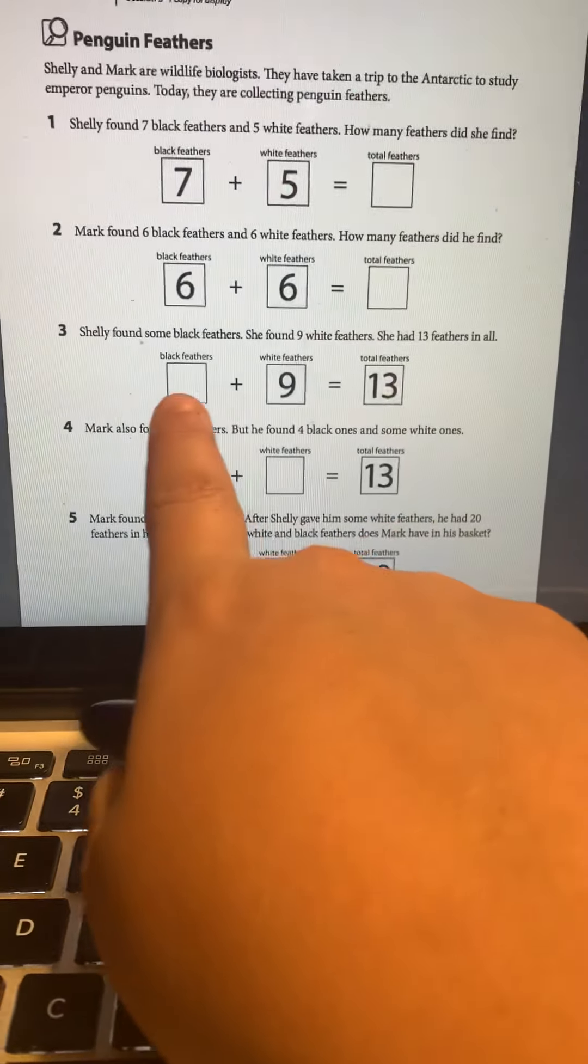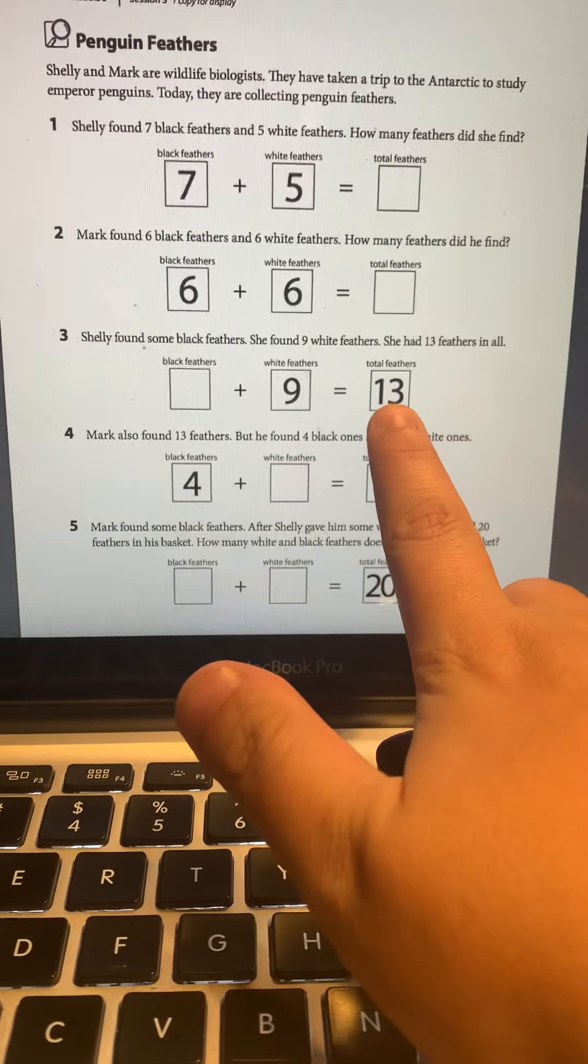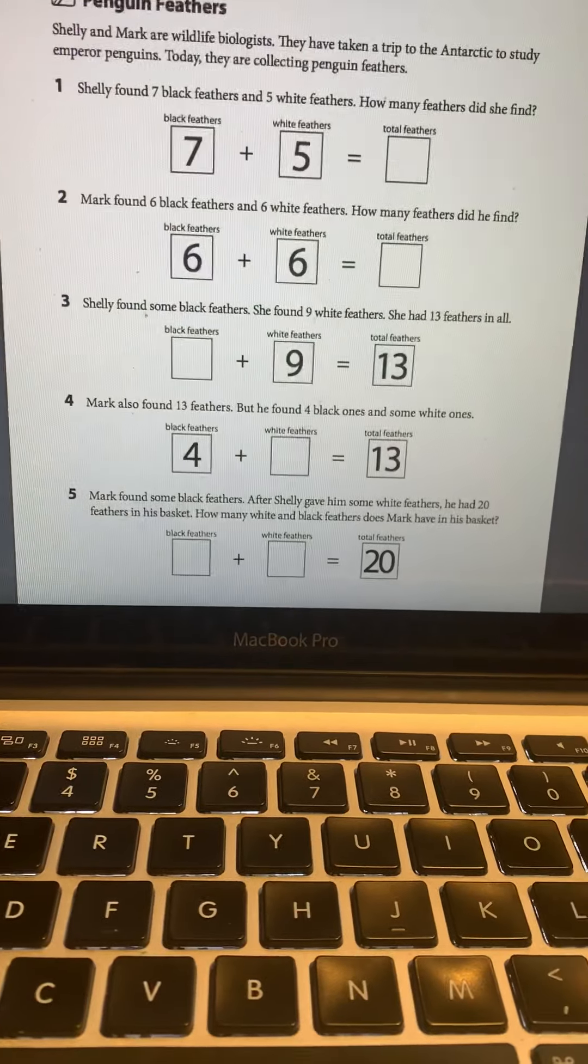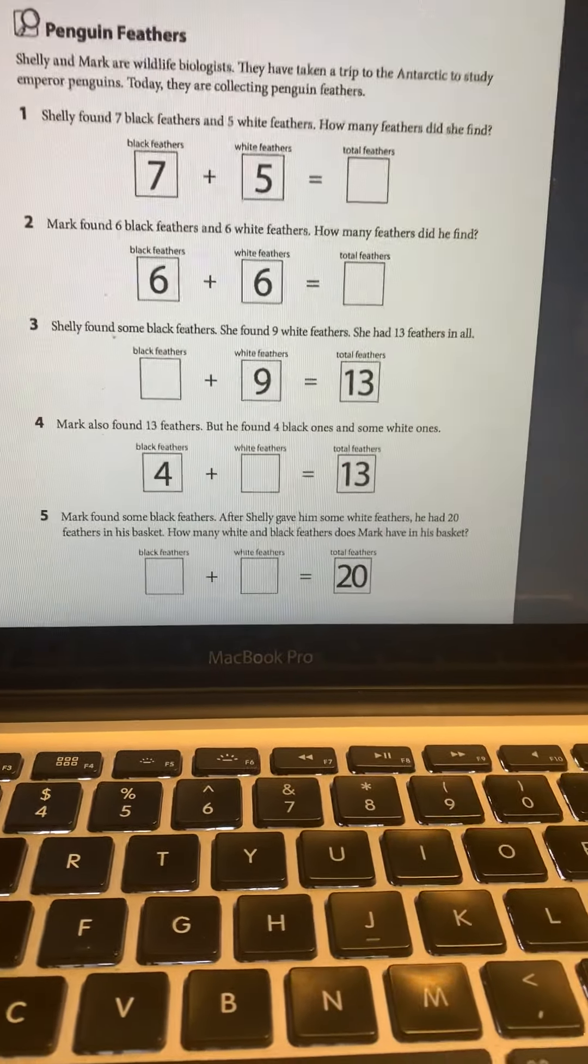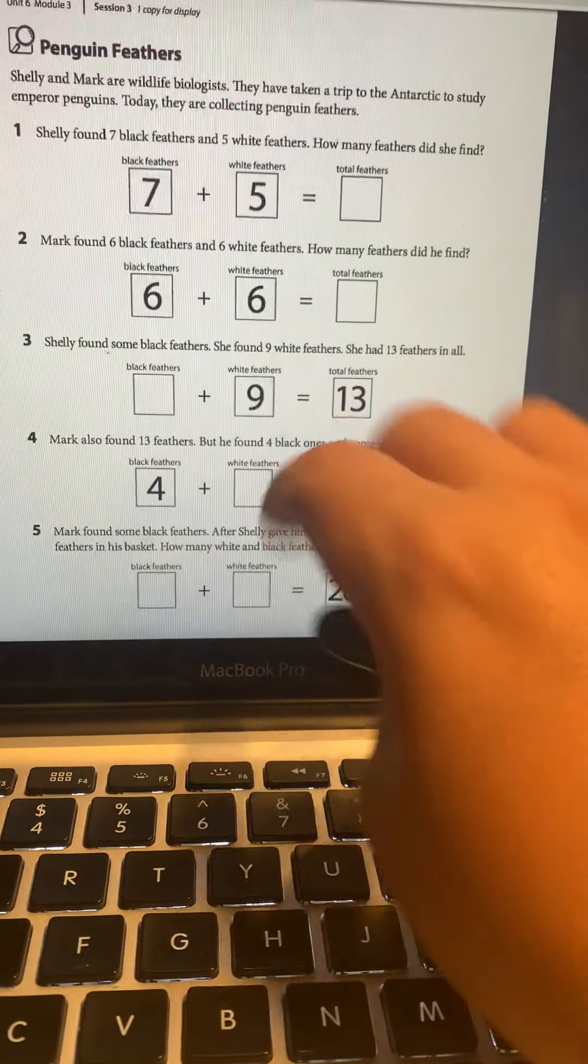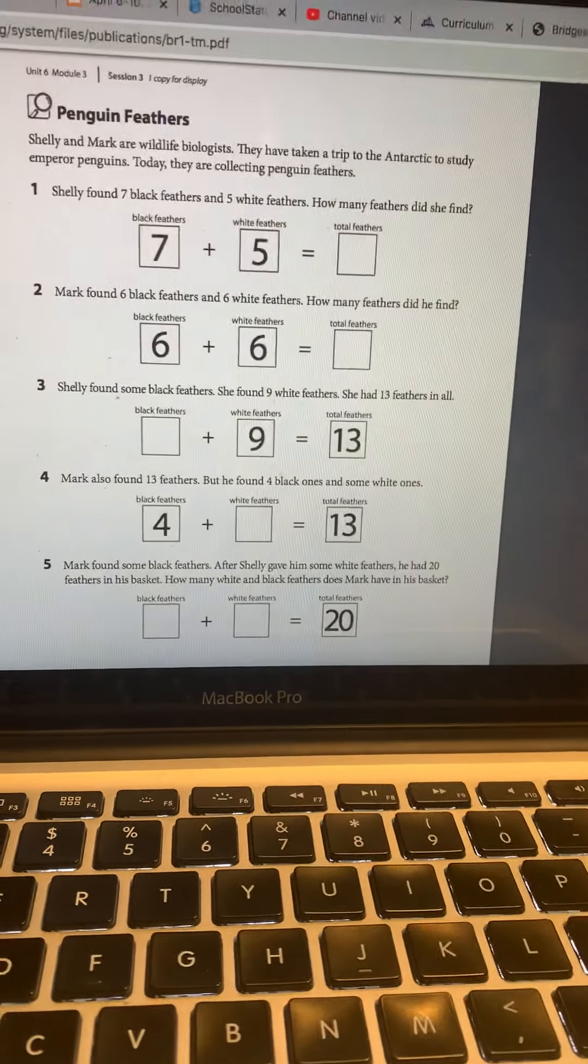Number three, if you look, we are missing a number. It gives us one number and it gives us our total, but we have a missing addend. So we got to figure out blank plus nine equals 13. I know I've got to stop at 13. So I'm going to put nine in my brain and count on until I get to 13. So I'm going to go to my paper and say, I'm going to put nine tally marks.